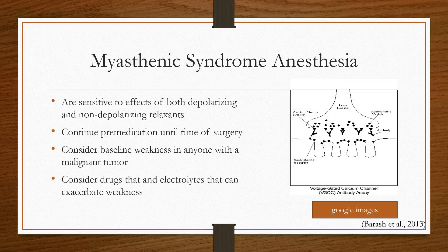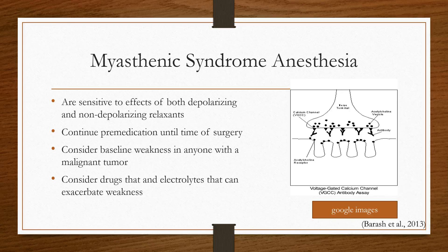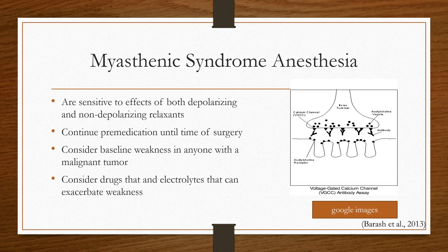With myasthenic syndrome, conversely, these patients are more sensitive to succinylcholine and to non-depolarizers — sensitive to both. Always continue their pre-medications up to the time of surgery for optimization. If any patient with malignancy is not showing return of twitches on train-of-four 45 minutes after rocuronium, myasthenic syndrome should be in your differential. Always consider electrolytes — especially calcium: is ionized calcium greater than 1.1 to 1.2? If potassium is low you can have muscle weakness, and as we know from OB, hypermagnesemia can also lead to muscle weakness.